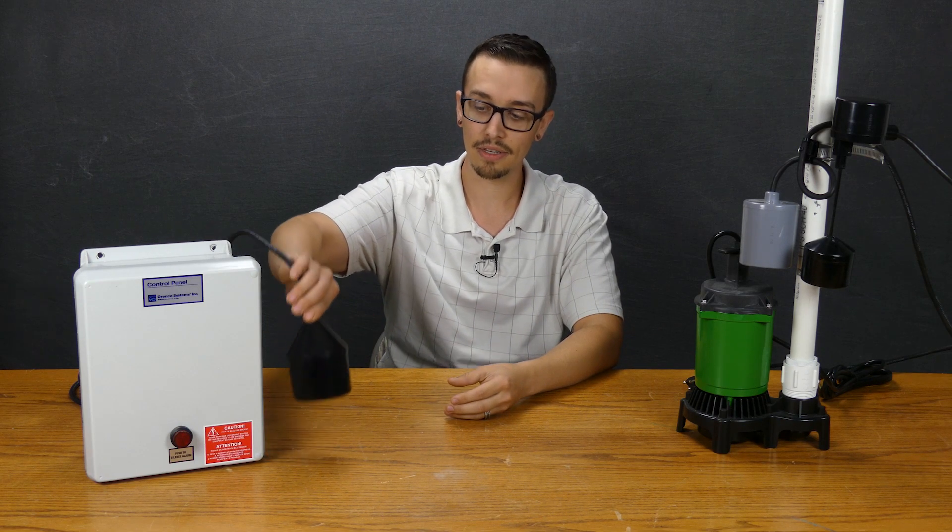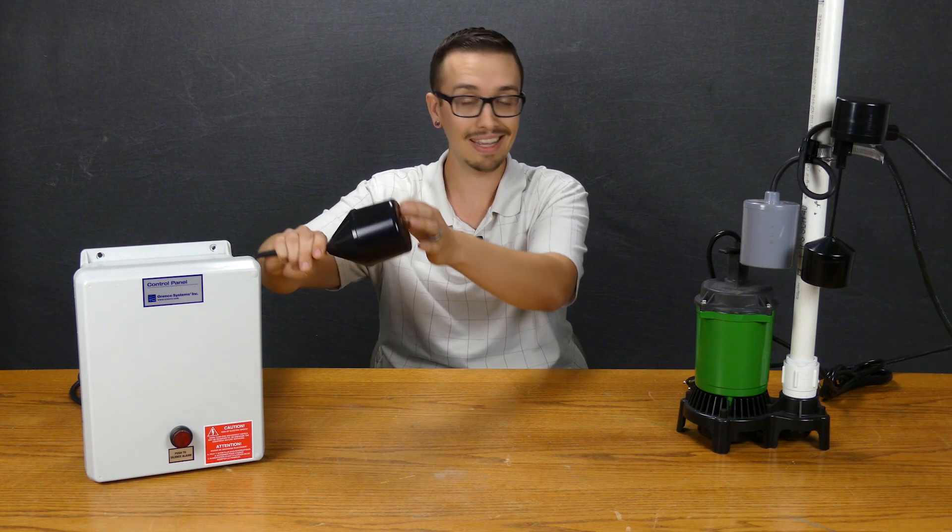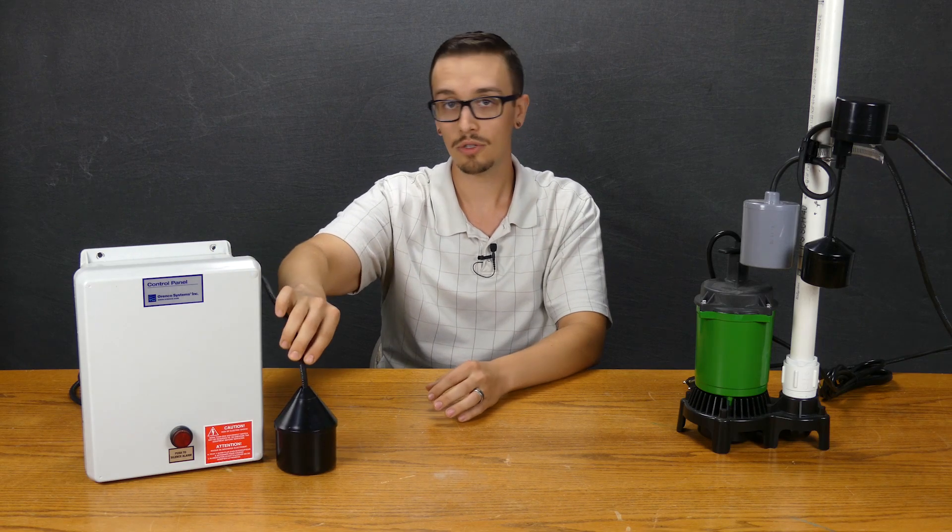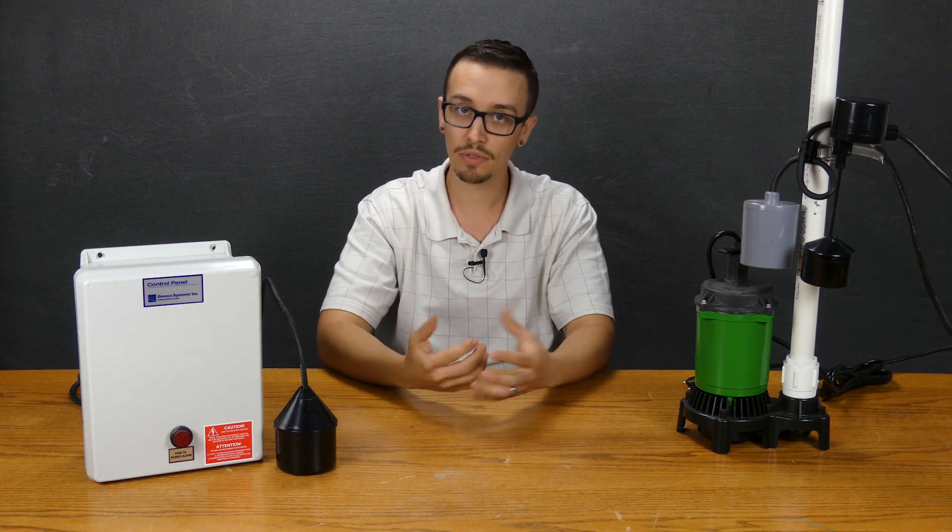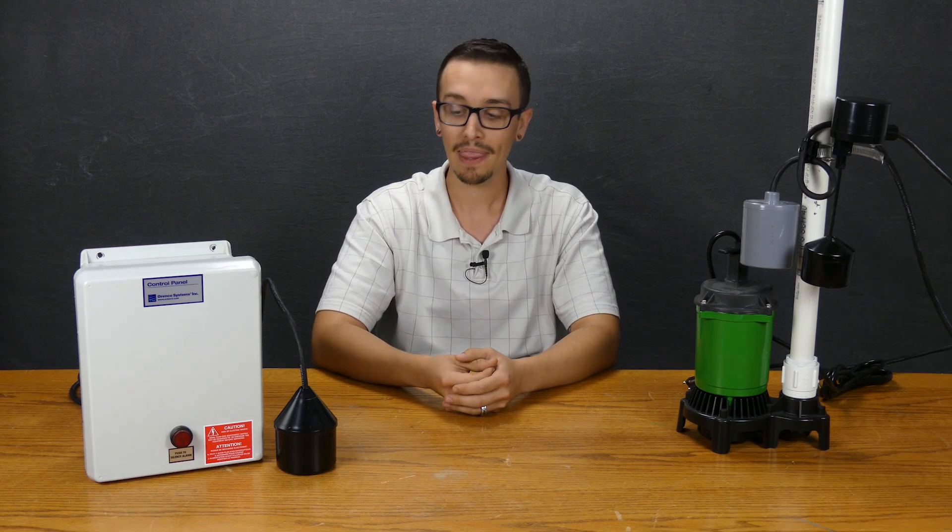And that's a completely different story with a control switch. A control switch generally is a lot shorter range of travel and it's going to engage or disengage with very little movement. So that's one of the biggest differences between control switches and pump switches.